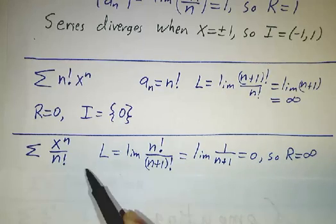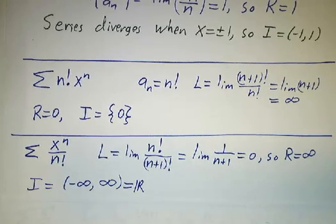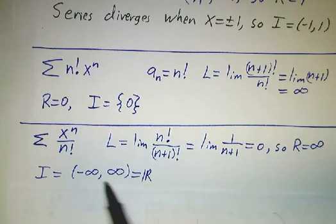So that means the radius of convergence is infinite, and the interval of convergence is everything. No matter how big x is, this series converges.